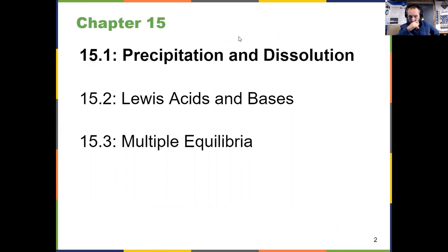In 15.1, we'll get precipitation and dissolution, building on some of the equilibrium information from chapters 13 and 14. Another important idea in 15.2, covering Lewis acids and bases and coordination complexes. And then putting the ideas together in 15.3, which deals with multiple equilibria occurring simultaneously.